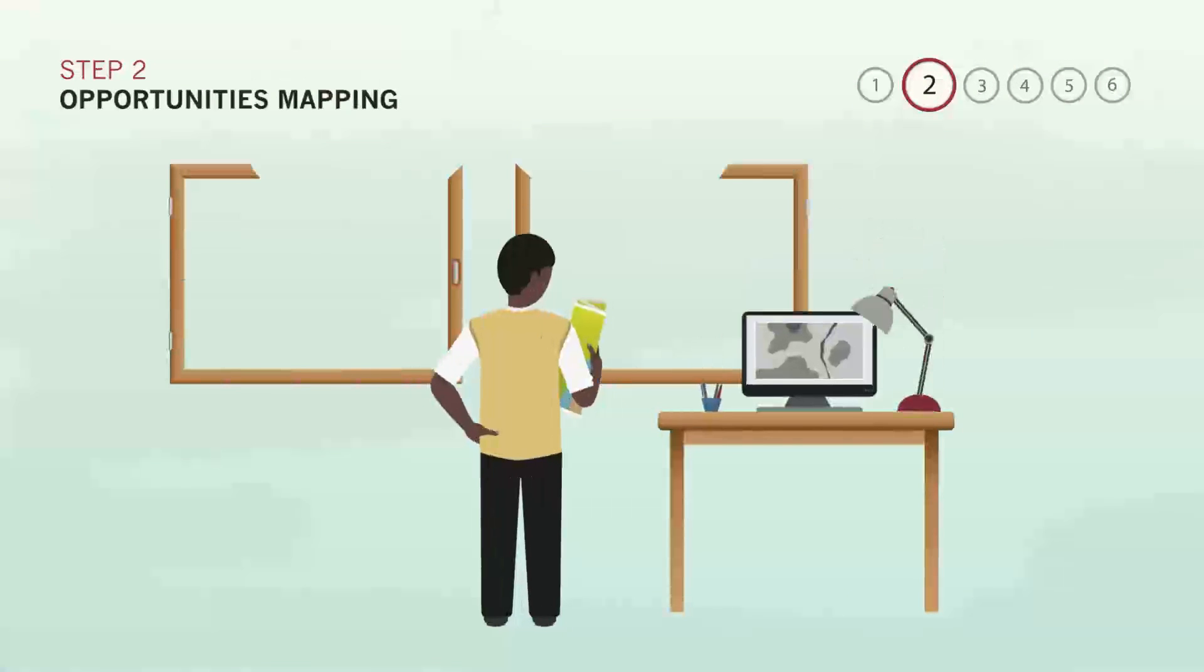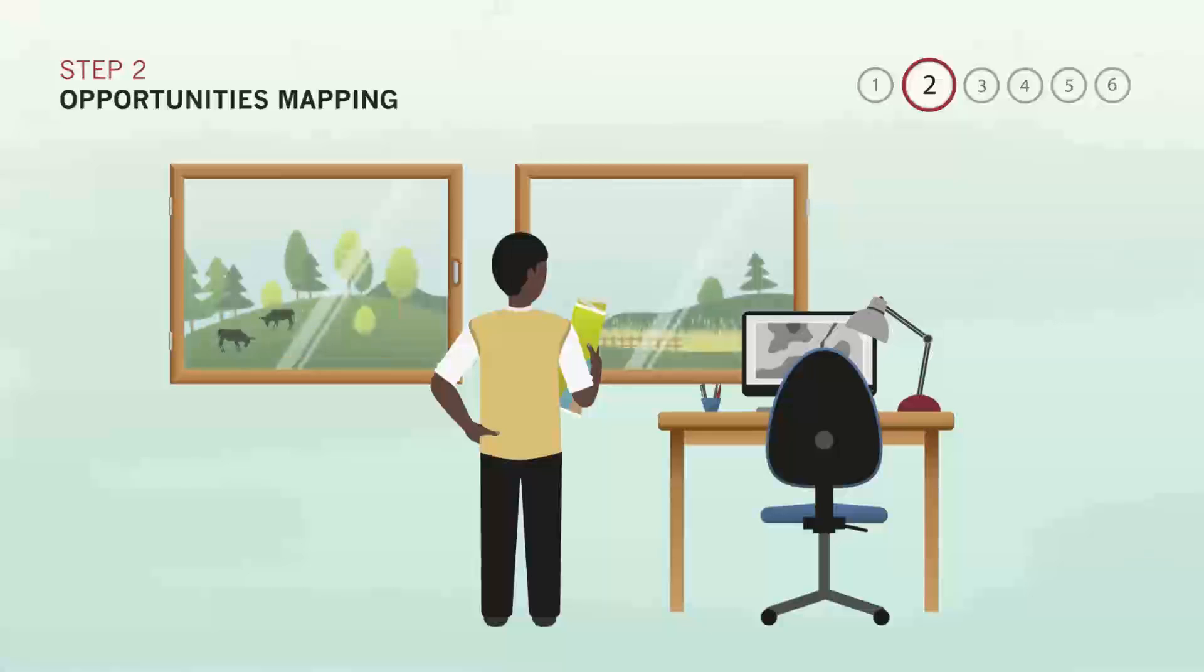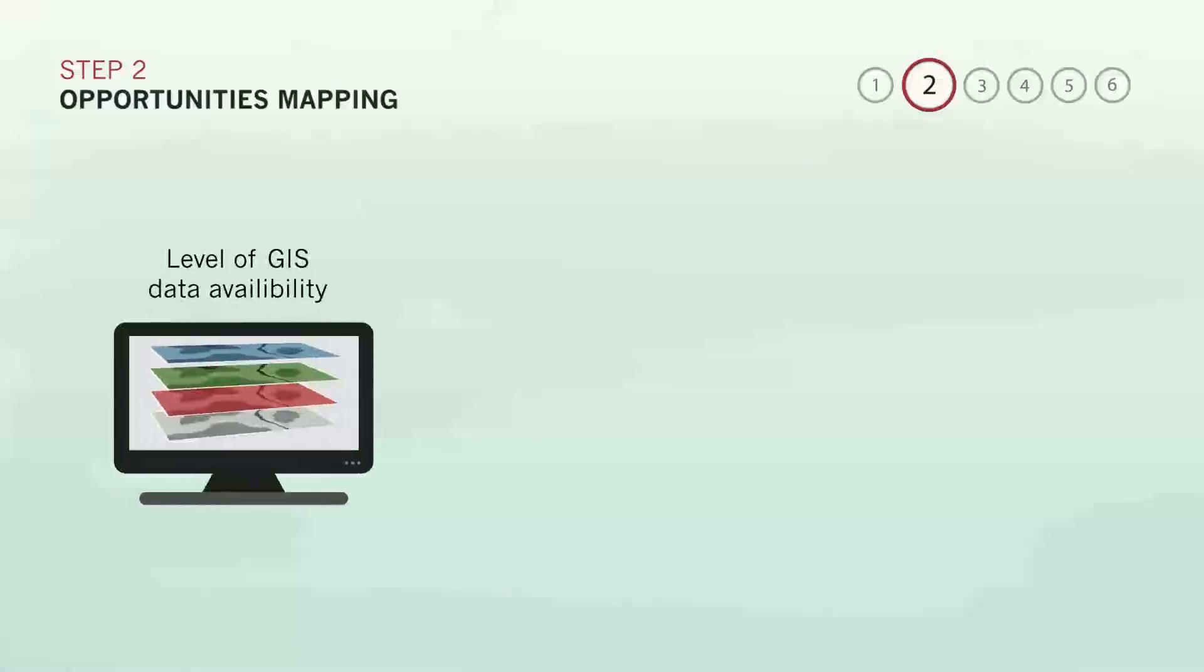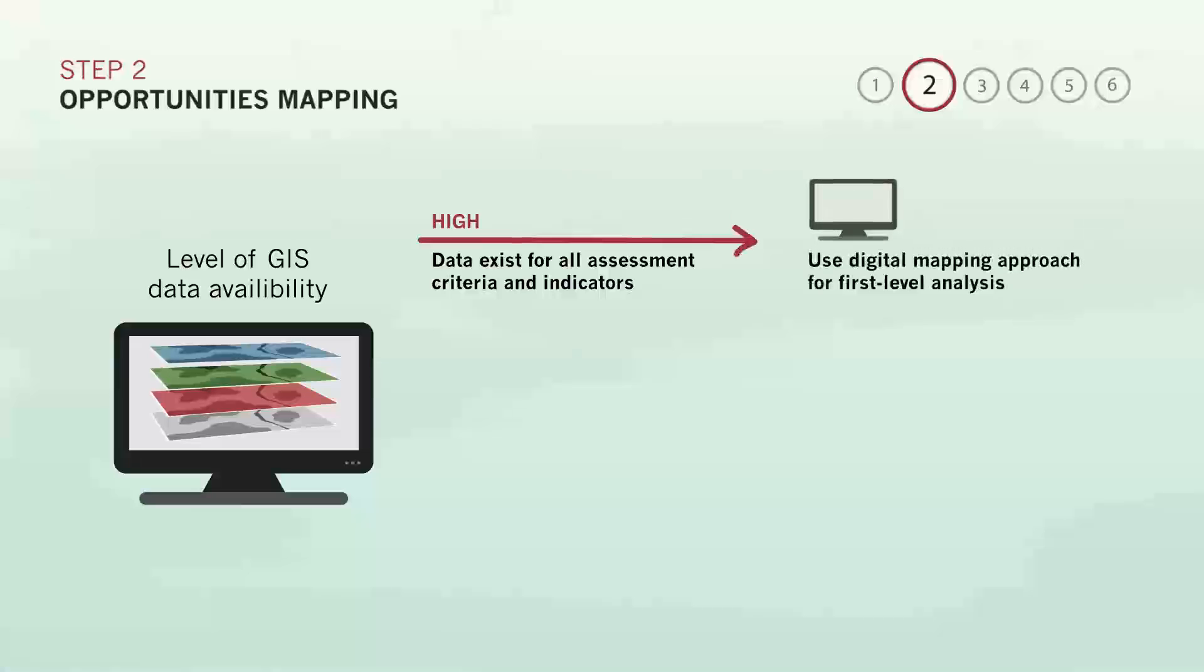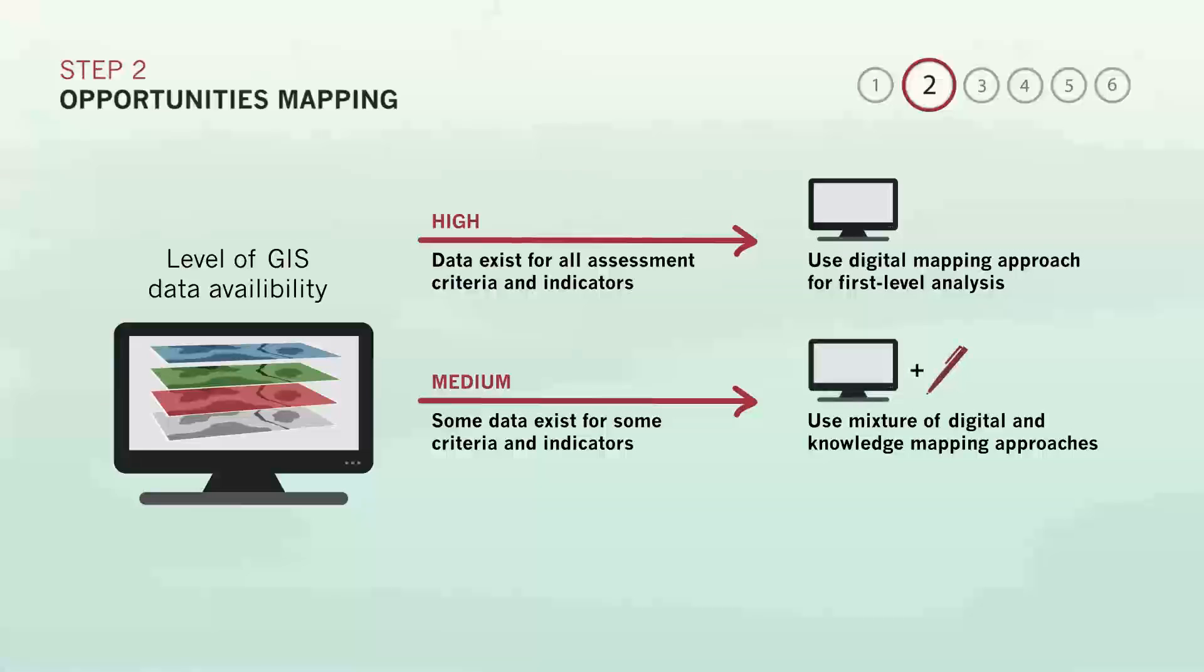Should you use digital mapping or knowledge mapping in your assessment? Both have their strengths and weaknesses. Digital mapping can be precise and efficient, but it can also ignore local realities if they aren't represented in the data. Knowledge mapping, on the other hand, can provide local insights, like what trees grow best in the area, but can remain vague when it comes to biophysical information, like how much rain falls on a particular hectare of forest in the region. In the end, most assessment teams choose to combine both mapping approaches. How much you use one over the other may depend on how much digital data is available.